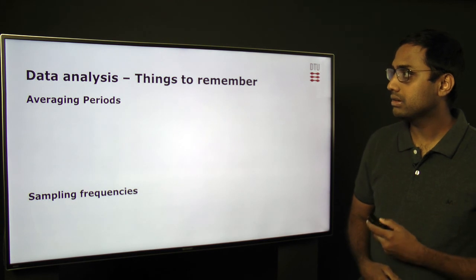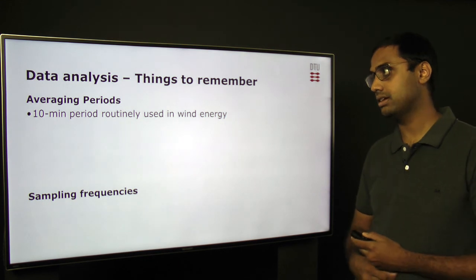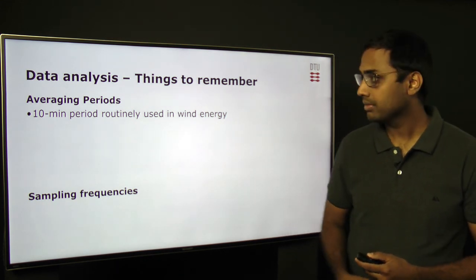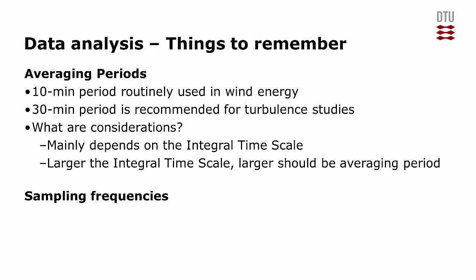Now we talk a little bit about data analysis, things to remember. Averaging periods is very important. Ten-minute period is routinely used in wind energy, but it is recommended that 30-minute period be used for turbulence studies. What are the considerations? It mainly depends on the integral time scale. One thing to remember is: larger the integral time scale, larger should be the averaging period.